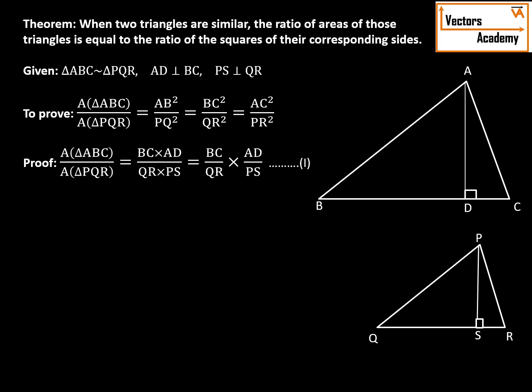We will name this as equation 1. Now if we consider the two triangles, that is ABD and PQS, these are right angle triangles on the left hand side of both the larger triangles. So we will see the similarity in both these triangles.